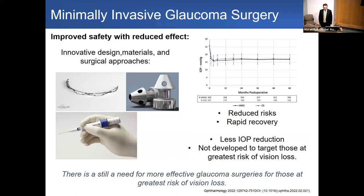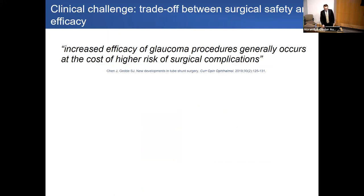Minimally invasive glaucoma surgeries — like the Hydrus stent, iStent, and Xen gel stent — have brought novel device designs and materials to glaucoma surgery, reducing the risk profile and recovery period compared to filtering surgeries. However, they traditionally offer less IOP reduction and weren't developed to target those at greatest risk of vision loss. There is a fundamental trade-off between safety and efficacy in glaucoma surgery that disproportionately benefits those with early to moderate glaucoma.